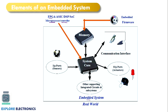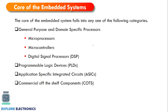This embedded system interacts with the external world, where we give some inputs and look at the outputs. An embedded system performs certain specific operations — it is not a general purpose one. The core of the embedded system — the heart — consists of microprocessors, microcontrollers, or digital signal processors. It takes input, processes it, and gives us the output. These are the general purpose and domain-specific processors.